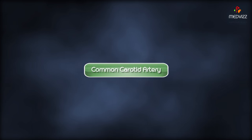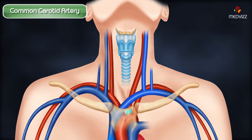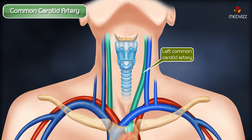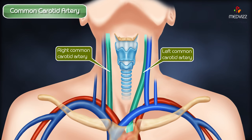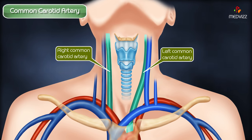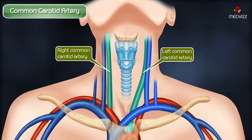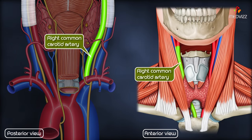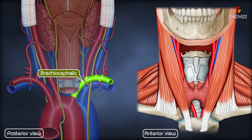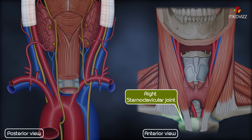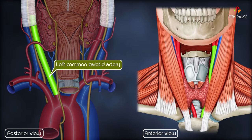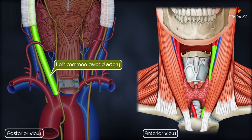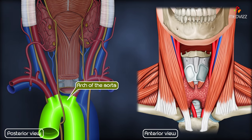There are two common carotid arteries in our body — one on the left and another on the right. These arteries originate from different arteries but follow asymmetrical courses. The right common carotid artery is a branch of the brachiocephalic artery and begins in the neck behind the right sternoclavicular joint, whereas the left common carotid artery is a branch of the arch of aorta.